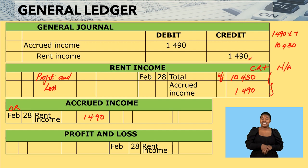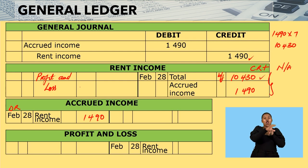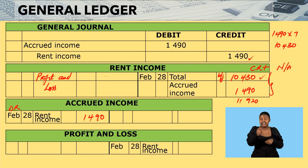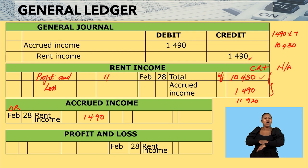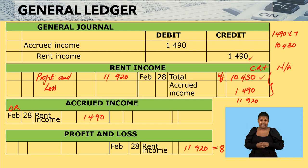In profit and loss, I bring the total of the rent income account. Grab your calculator and punch in $10,430, then add $1,490. You find $11,920. That is the amount you close off your rent income account to profit and loss. So in the profit and loss, rent income becomes $11,920 — this is rent for the eight months the tenant has been in our building.